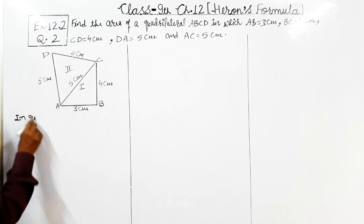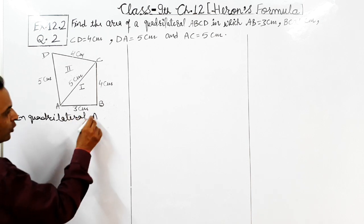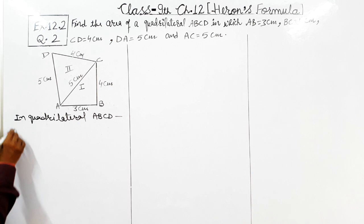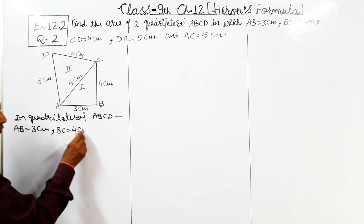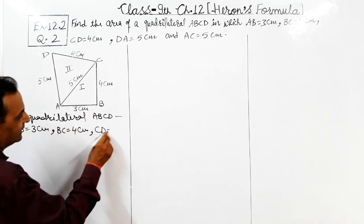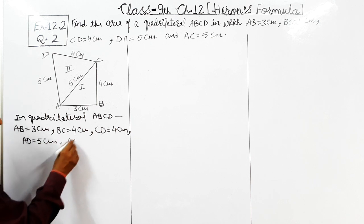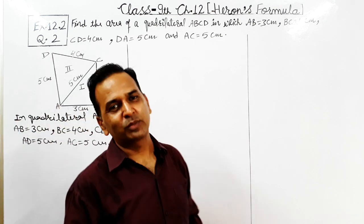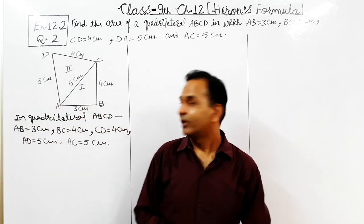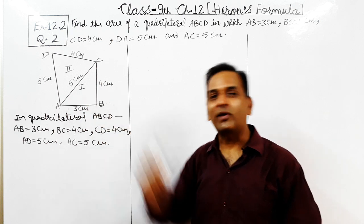In quadrilateral ABCD, the given dimensions are: side AB equals 3 cm, side BC equals 4 cm, side CD equals 4 cm, side AD equals 5 cm, and diagonal AC equals 5 cm. All these are the dimensions of quadrilateral ABCD. Now notice that triangle ABC has dimensions 3 cm, 4 cm, and 5 cm.